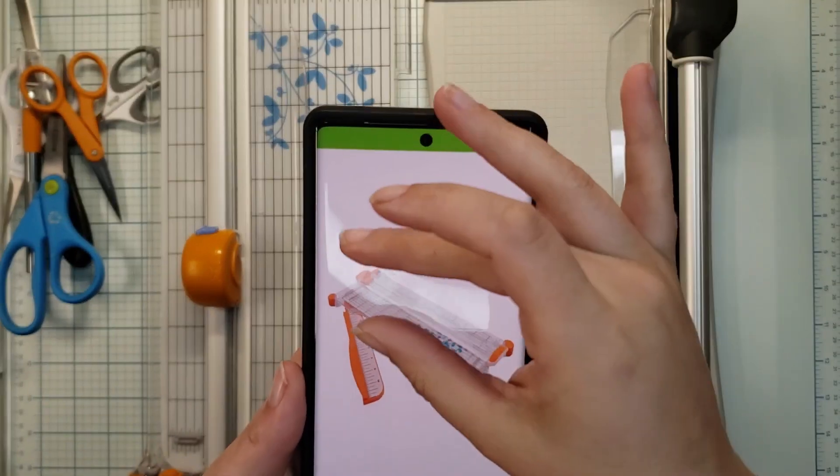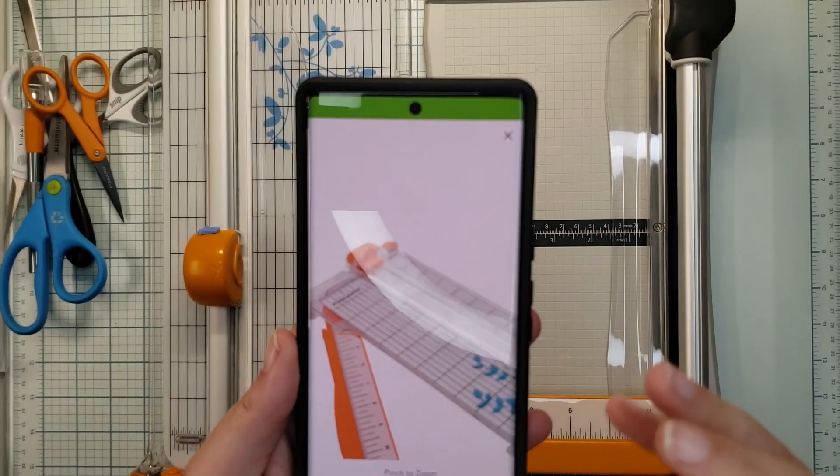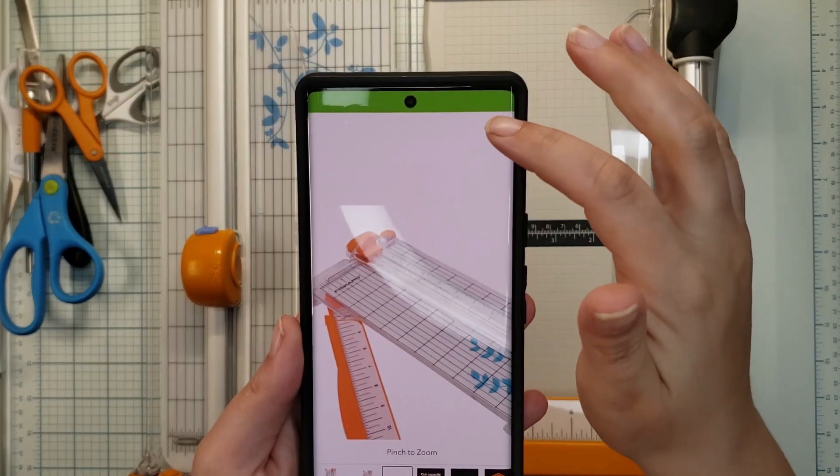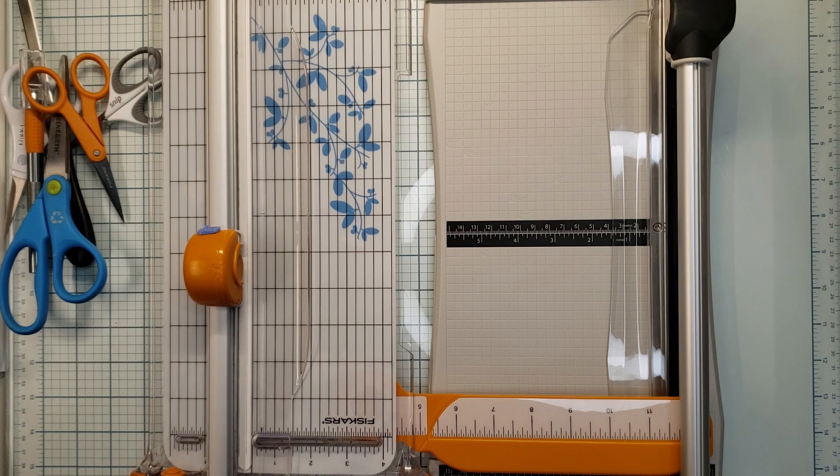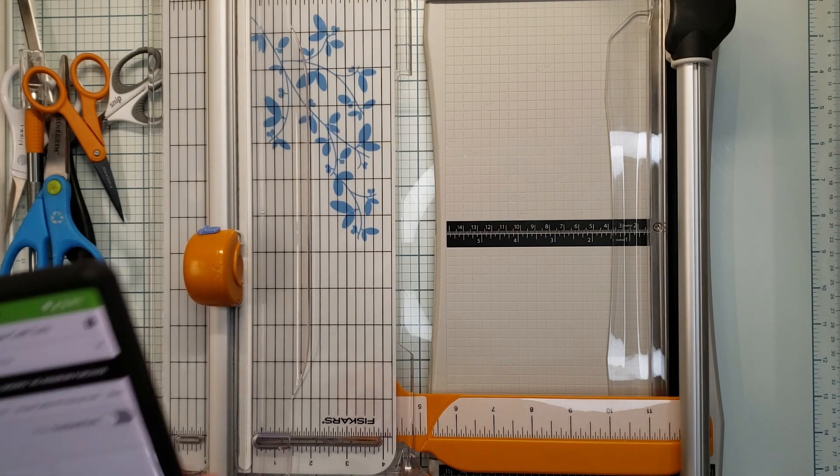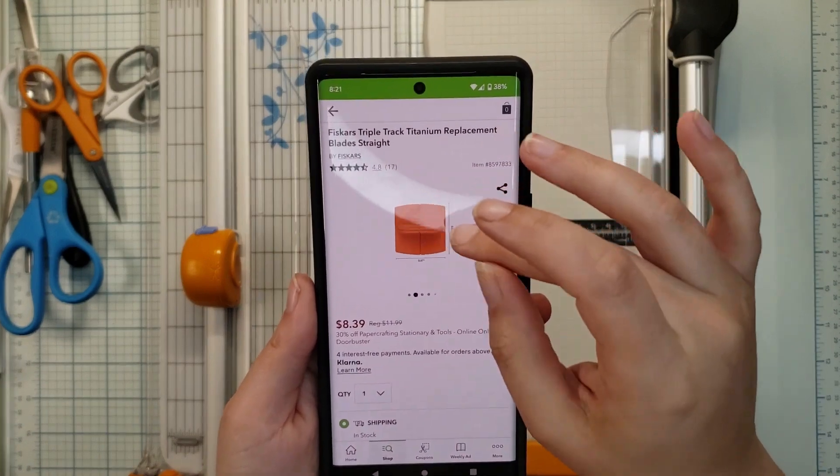See how it's a blade? So what happens is there's a housing unit, that's that orange piece, that has this little sharp little blade. And those blades wear out over time. In addition, when you're cutting with that type of trimmer, this is the blade, $8.39 for two.